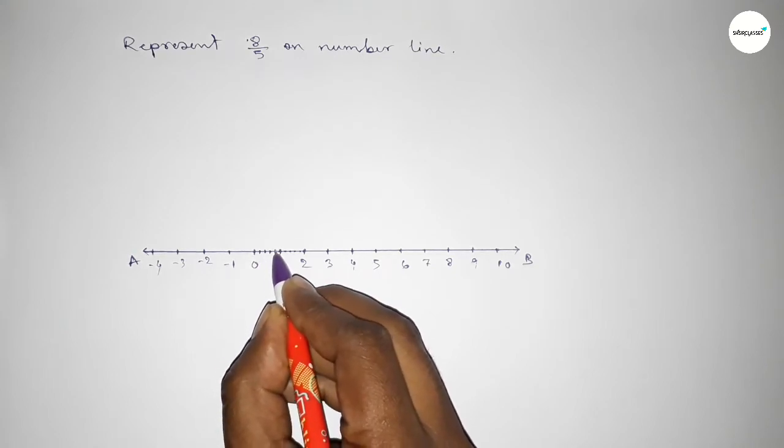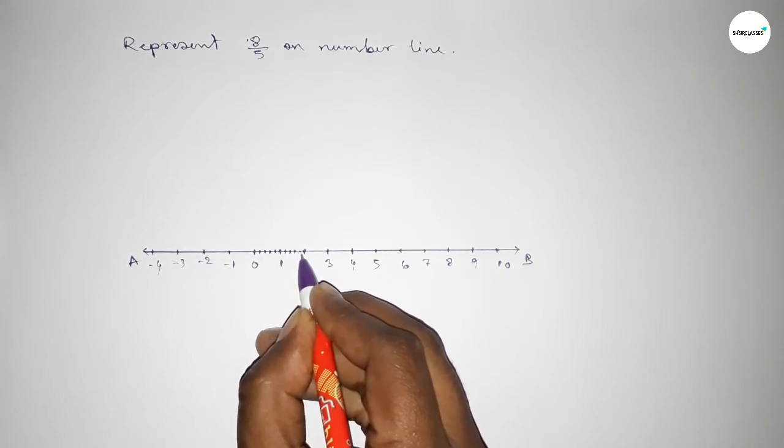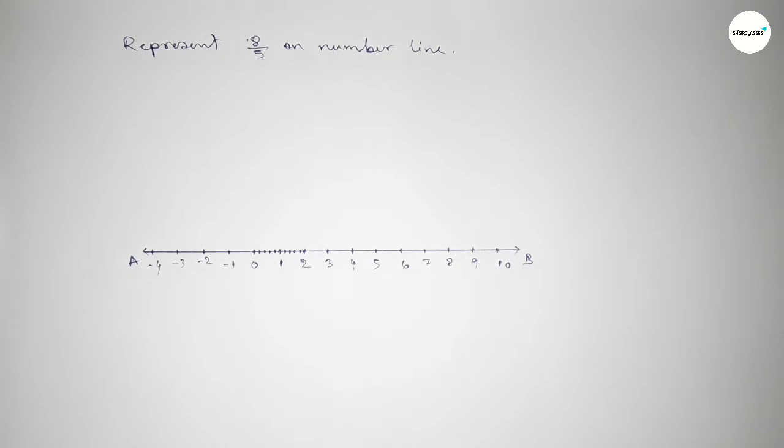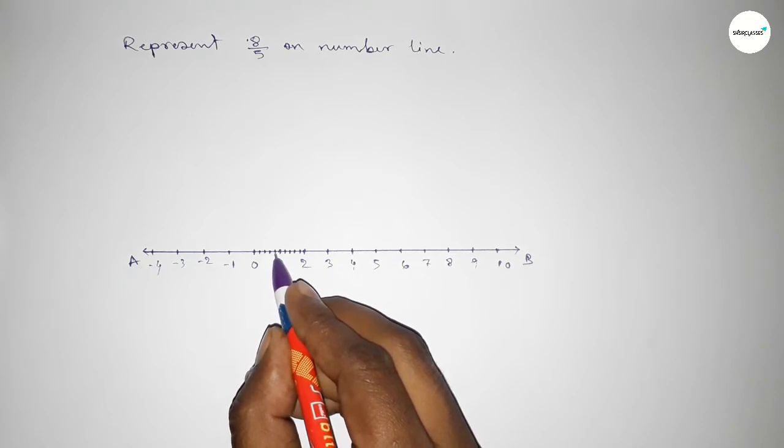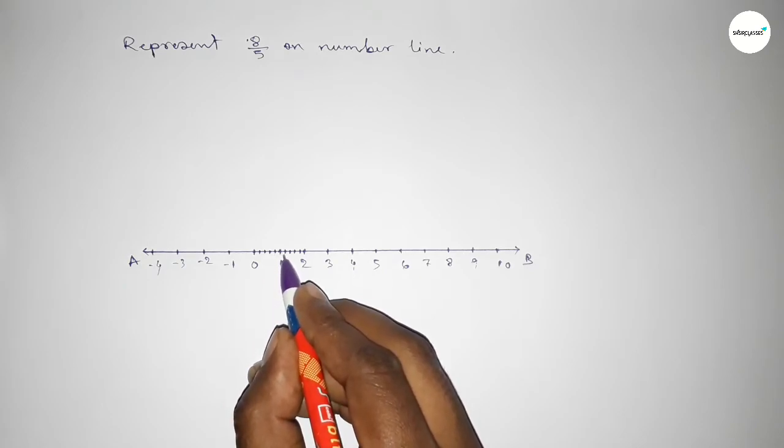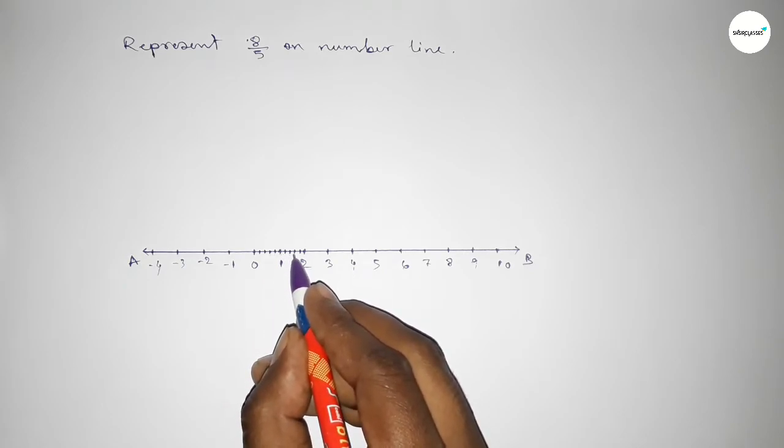Now marking the numbers with deep color to understand perfectly. This is 1 over 5, 2 over 5, 3 over 5, 4 over 5, 5 over 5, 6 over 5, 7 over 5, and this is 8 over 5. So this is 8 over 5 on the number line.